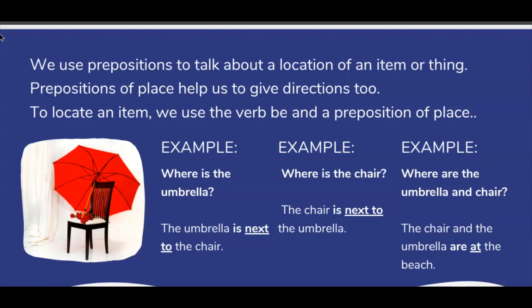Example: Where is the umbrella? The umbrella is next to the chair. Where is the chair? The chair is next to the umbrella. My final example: Where are the umbrella and chair? The chair and the umbrella are at the beach.